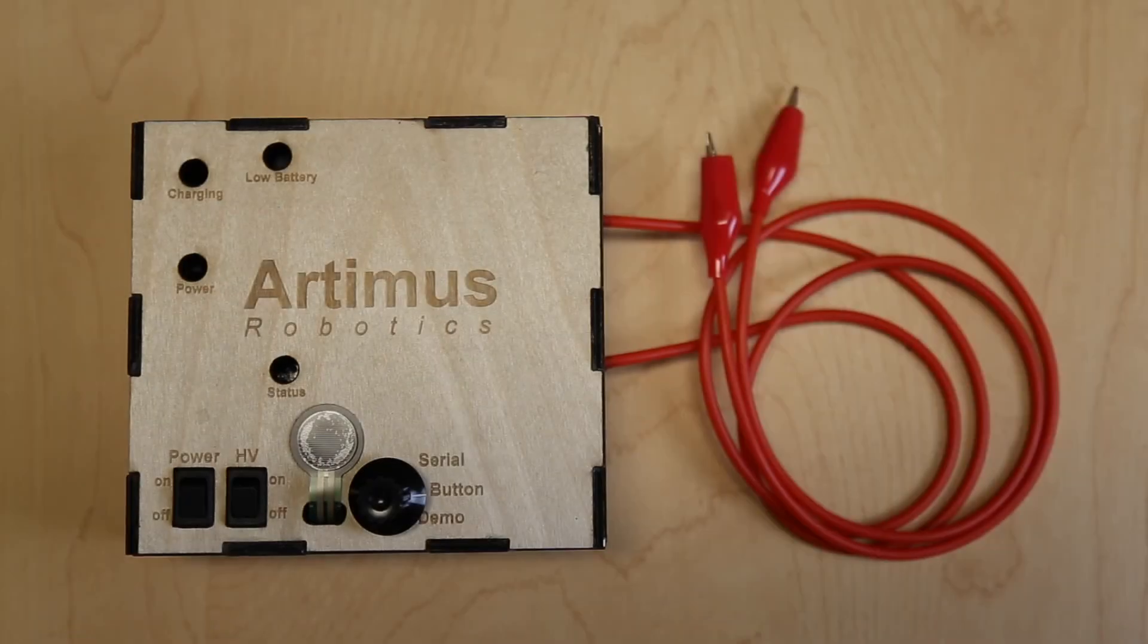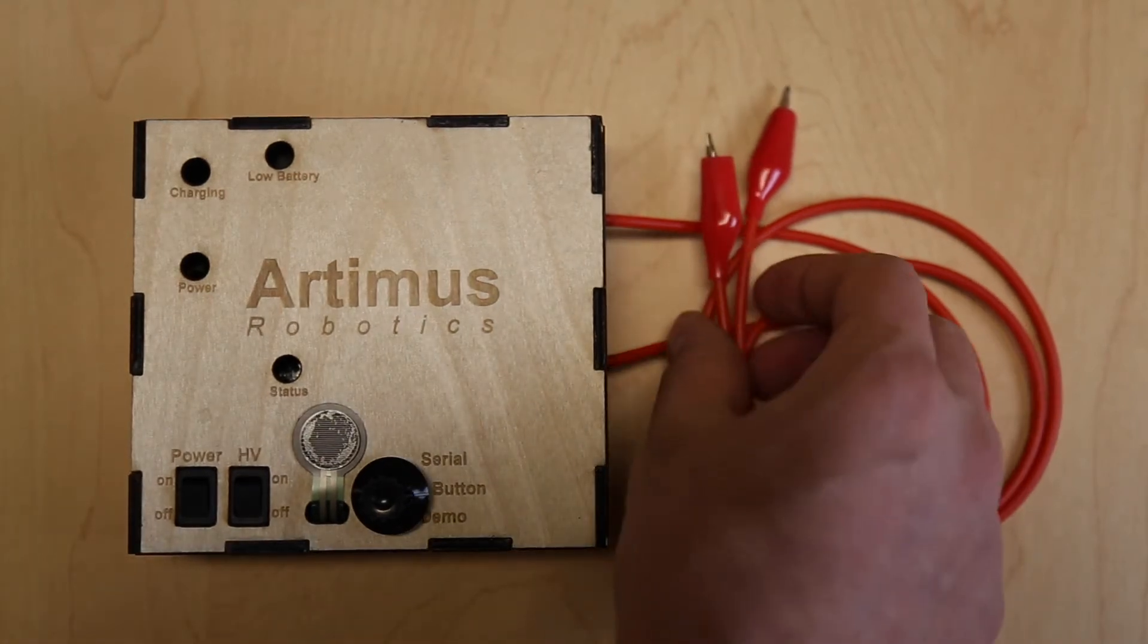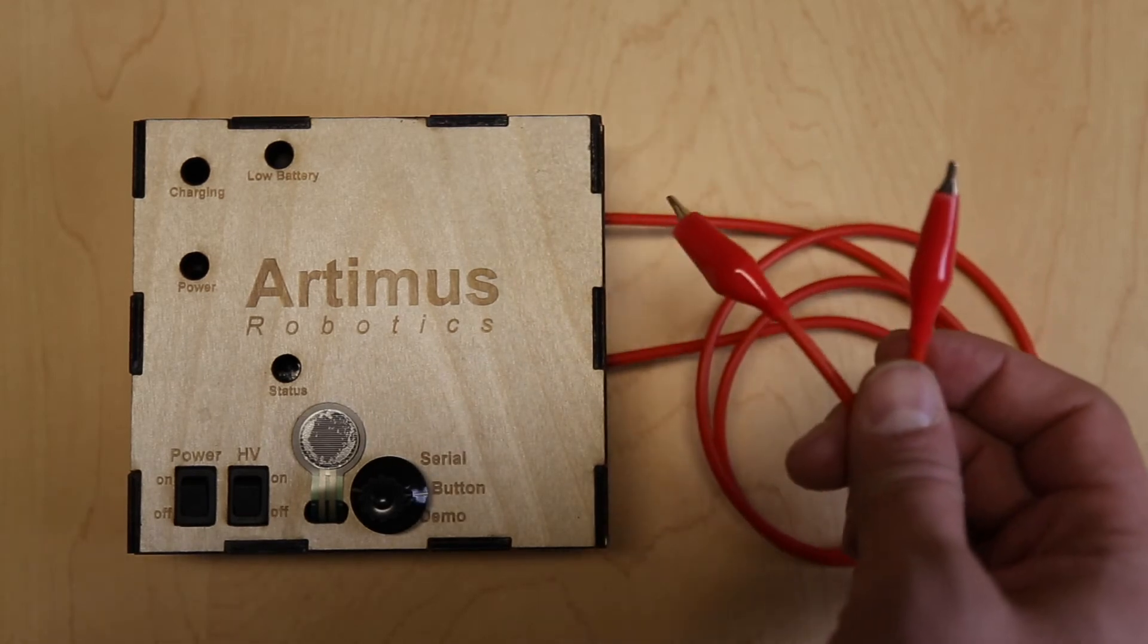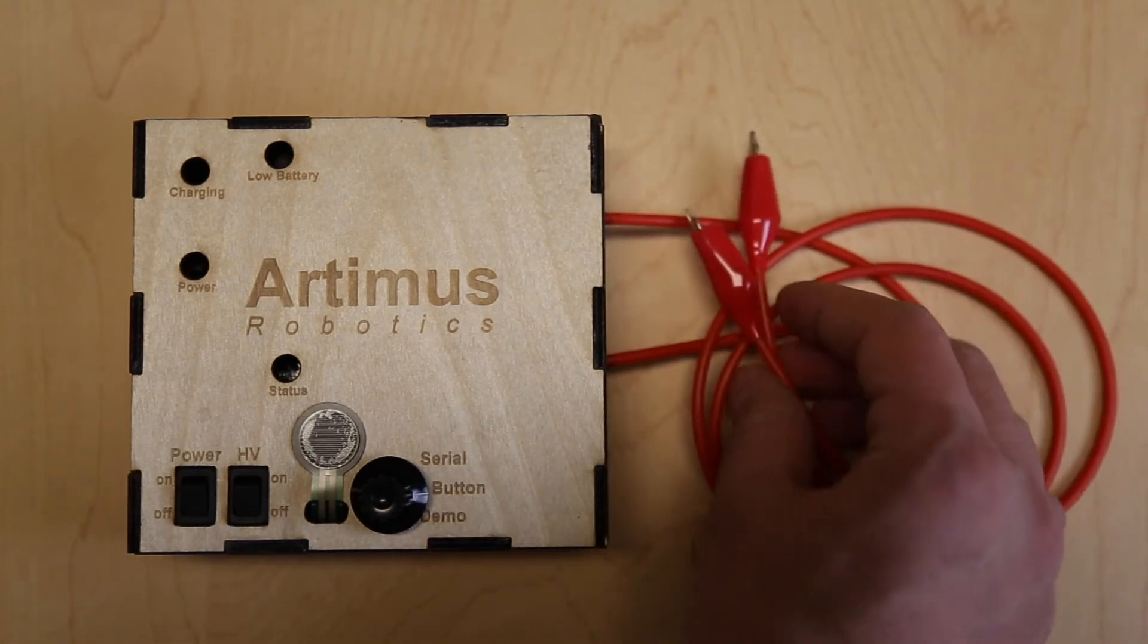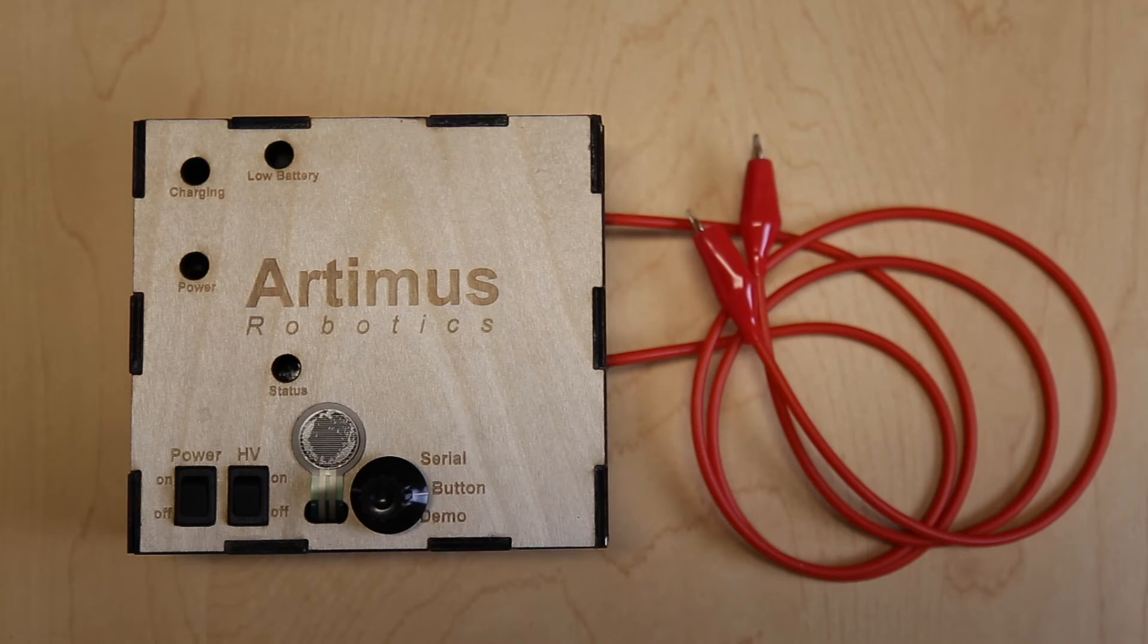The power supply has multiple user inputs, including a power switch, high voltage switch, and program control knob. The power supply has two output terminals that connect to the Hazel Actuators. Either terminal has the potential to be high voltage and should be treated appropriately.